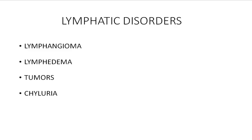The second vascular system we are going to discuss is disorders of the lymphatic system. Disorders of the lymphatic system include lymphangioma, which is a hamartoma of lymphatic tissue; lymphedema, which is edema due to lymphatic blockage or reflux; tumors arising from lymphatic channels and lymph nodes; and lastly an uncommon disorder known as chyluria, which is presence of chyle in the urine.